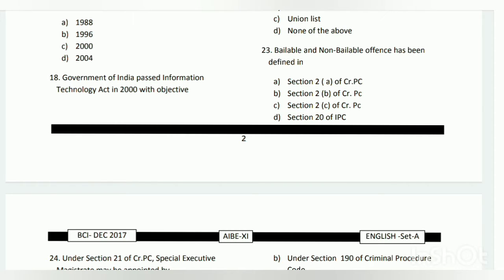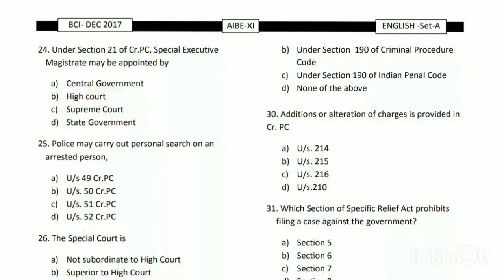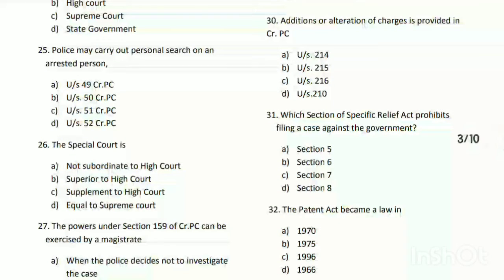The answer is Section 2A of CrPC. Question number twenty-four: under Section 21 of CrPC, a special executive magistrate may be appointed by whom? The answer is D - the state government.